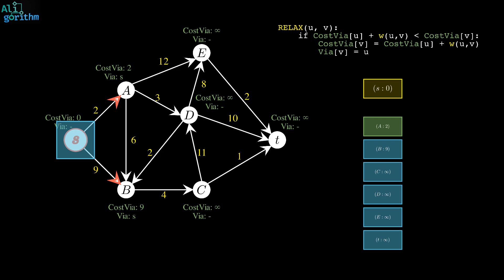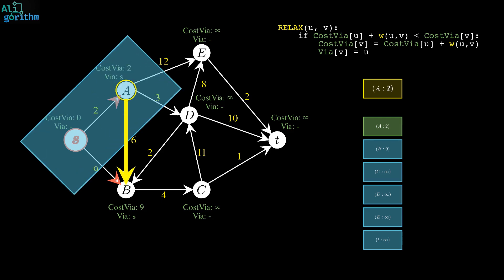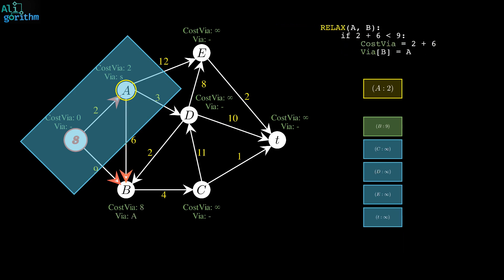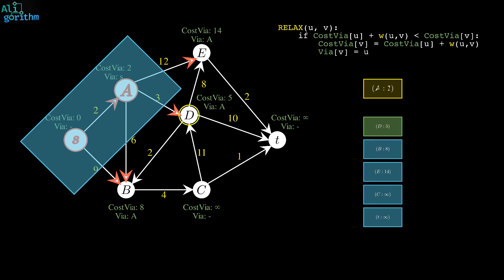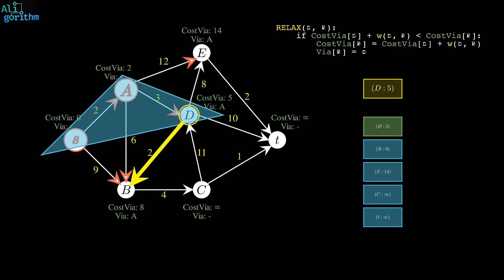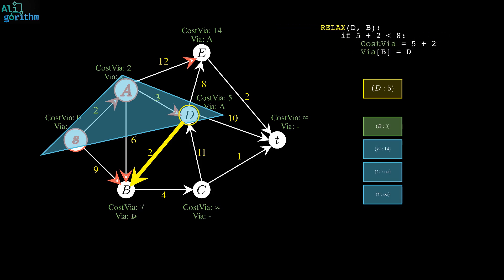Once all outgoing edges from S are relaxed, the algorithm extracts the new element from the heap, which is A, and applies the same routine. The algorithm continues this process, extracting the vertex with the minimum cost from the heap, adding it to the blue area, and relaxing its outgoing edges until the heap is empty.